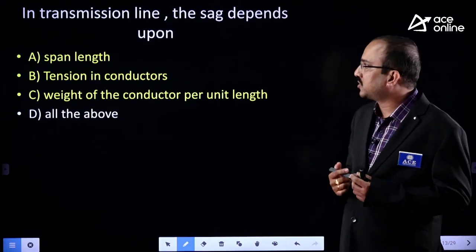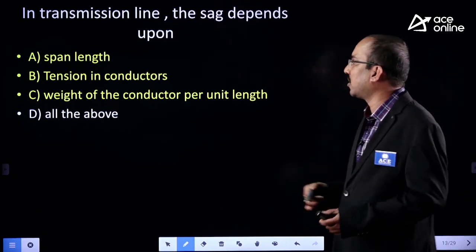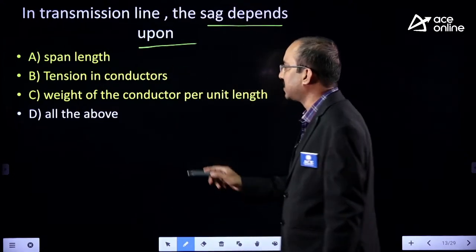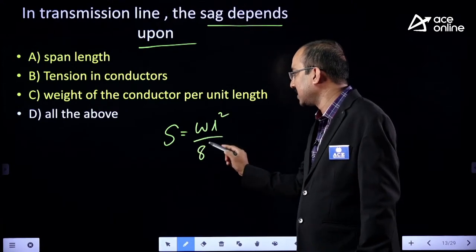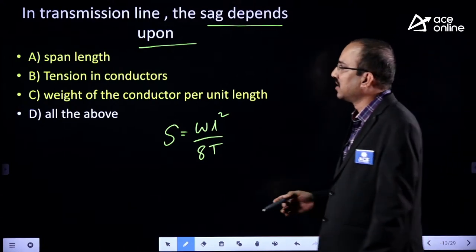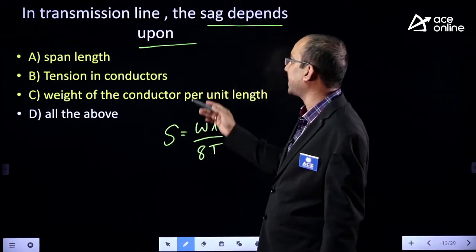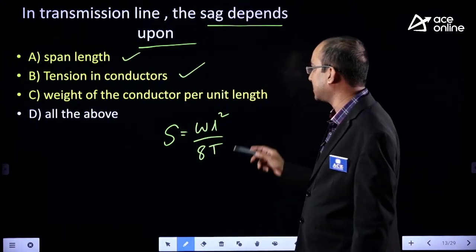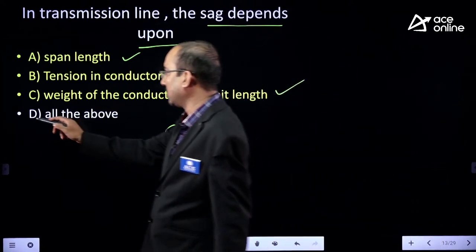In a transmission line, the SAG depends upon what? From the equation S = WL²/8T, SAG depends upon span length, tension in the conductors, and weight of the conductor per unit length. The answer is all of the above.